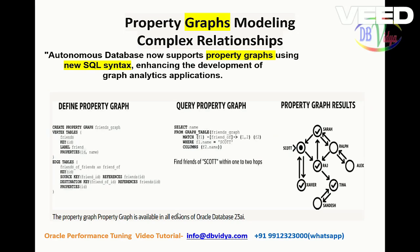The third feature is graphs. Till now, for graph purposes, you had to go to a different database. Now, property graphs can be used for analyzing complex relationships, which is very useful. You need not go to any new graph database for this purpose — Oracle has given extended support, so you can use property graphs directly using SQL. Nowadays many business analysts prefer to analyze relationships using graphs because one picture speaks a thousand words.